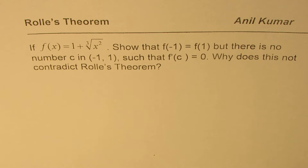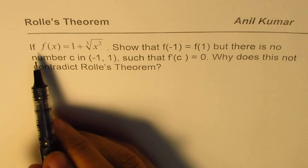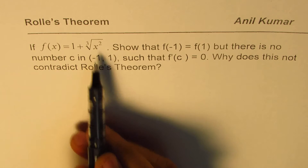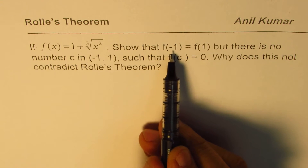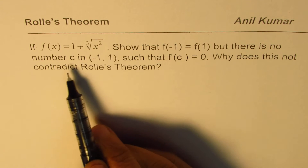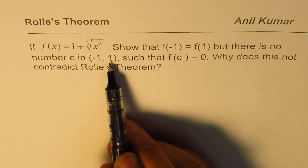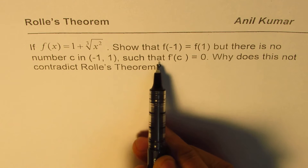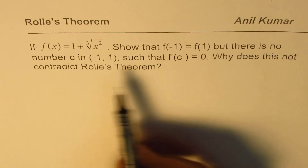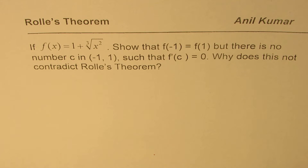I'm Anil Kumar, sharing with you a question on Rolle's theorem to consolidate our understanding of this concept. If f(x) equals 1 plus cube root of x squared, show that f(-1) equals f(1), but there is no number c within the open interval (-1, 1) such that f'(c) equals 0. Why does this not contradict Rolle's theorem?